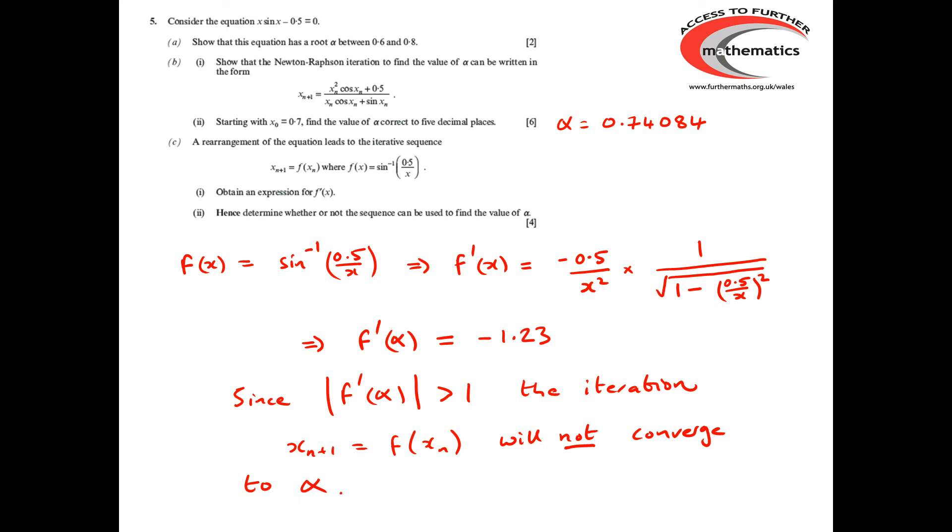The marking on this question, we need for the first part of the question to look at the value of g(0.6) and g(0.8) and see that there is a sign change and then we must clearly state that because of the sign change, there is therefore a root of the equation between 0.6 and 0.8. For the part b, we need first of all to differentiate g(x) for a method mark and then make use of the formula x_(n+1) = x_n - g(x_n)/g'(x_n).